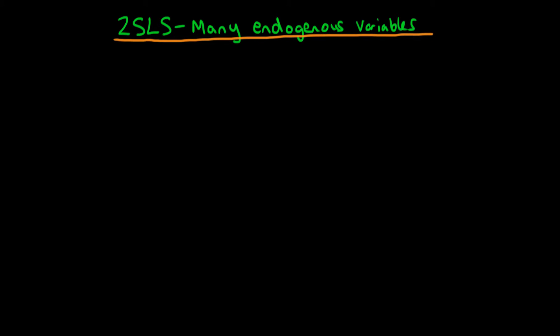In this video I want to talk about two-stage least squares, but in the situation whereby we have multiple explanatory endogenous variables in our model.